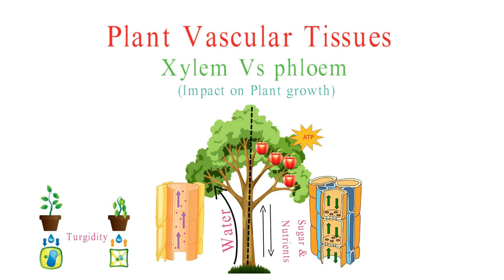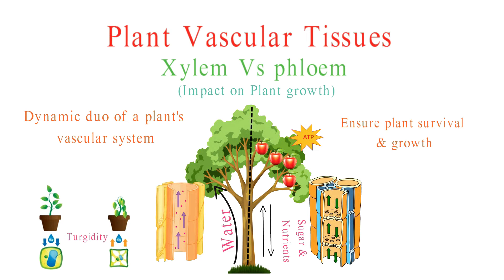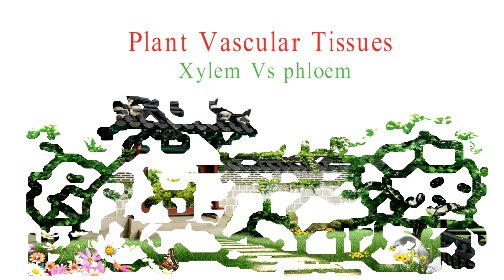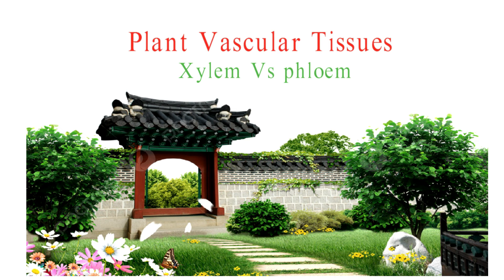In conclusion, phloem and xylem are like the dynamic duo of a plant's vascular system, working together to ensure its survival and growth. While xylem focuses on water and mineral transport, phloem takes care of the plant's food distribution. So the next time you admire a beautiful garden or a towering tree, remember that beneath the surface, a complex network of phloem and xylem tissues is hard at work, keeping the plant healthy and thriving.